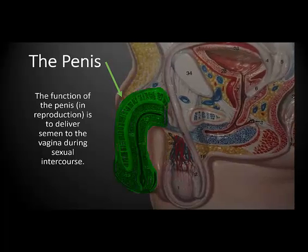Lastly, this entire structure is collectively called the penis. The function of the penis in reproduction is to deliver semen to the vagina during sexual intercourse.